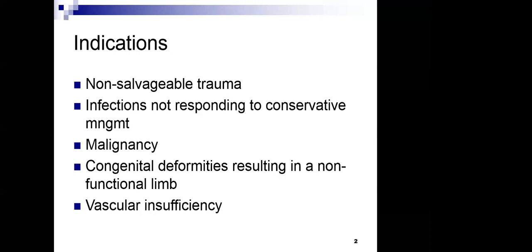An amputation is a very significant, life-changing procedure. Before you can think of cutting off part of a limb, there must be strong indications. With advances in surgical procedures, many conditions that previously required amputation are no longer treated that way — instead, salvage surgery is performed. Clear indications now include non-salvageable trauma, where a part of the limb has been crushed beyond repair.